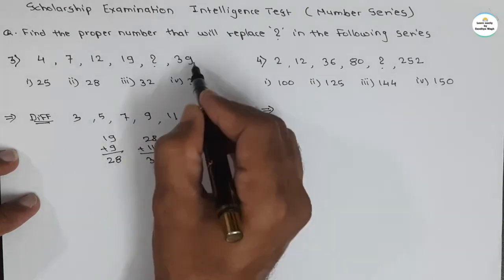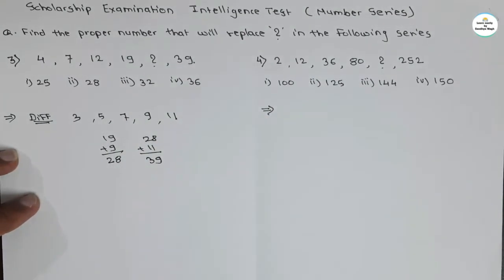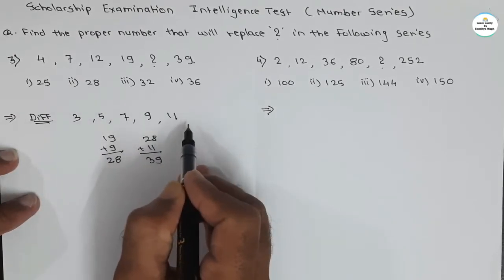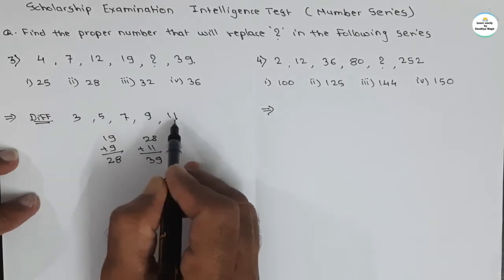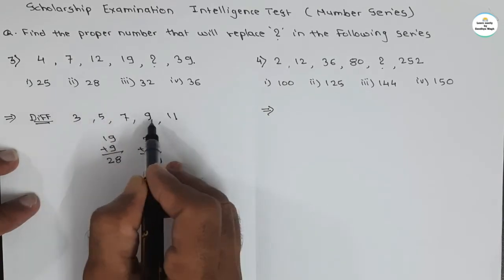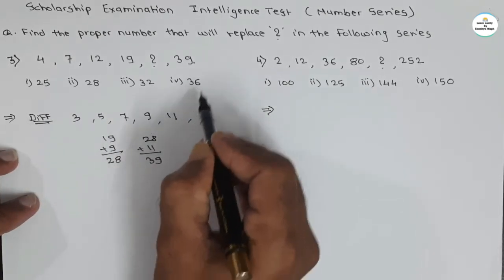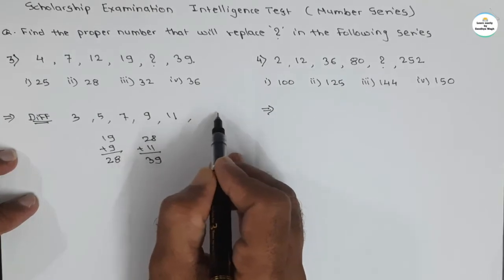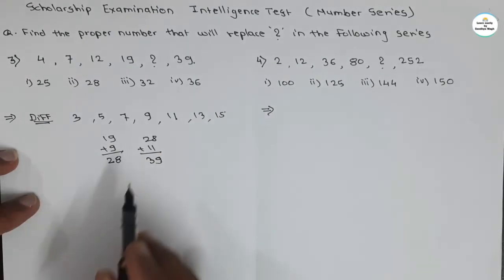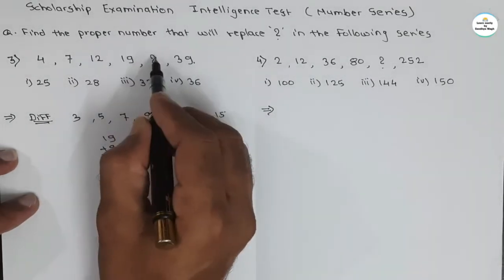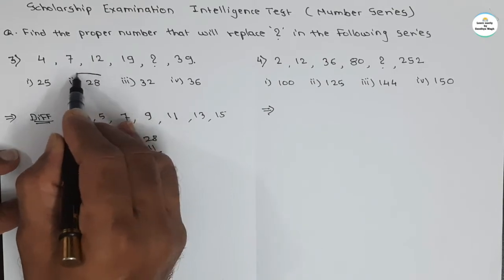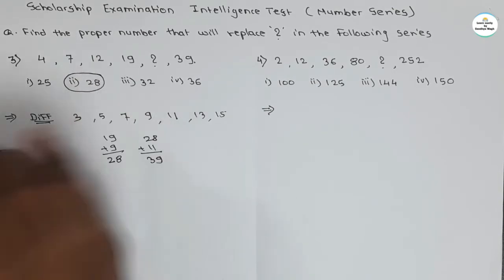So there is the number 39, confirming the series. The difference between the numbers is increasing by 2: 3, 5, 7, 9, 11. The question mark will be replaced by 28. So 28 is our correct answer.